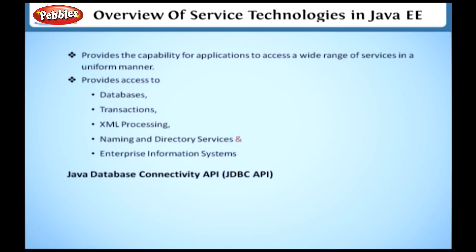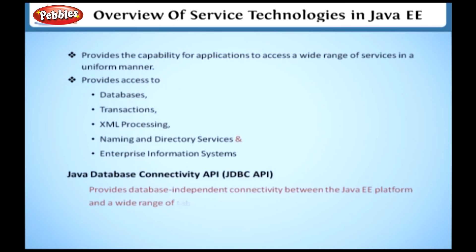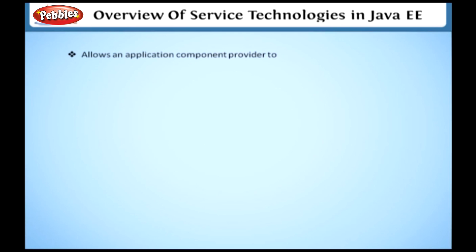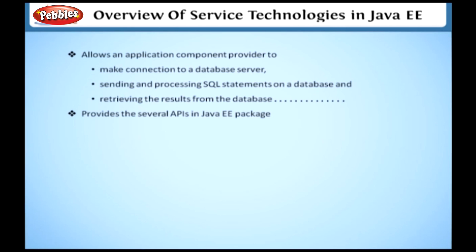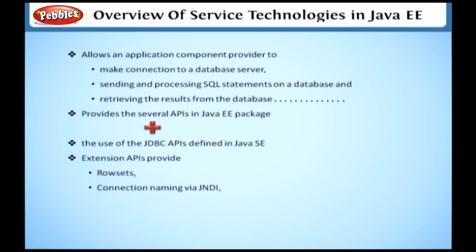Java Database Connectivity API — JDBC API. The JDBC API provides database-independent connectivity between the Java EE platform and a wide range of data sources. JDBC technology allows an application component provider to make connections to a database server, send and process SQL statements on a database, and retrieve the results from the database. To interact with the Java EE server, JDBC provides several APIs in Java EE packaging in addition to the JDBC APIs defined in Java SE. The extension APIs provide rowsets, action naming via JNDI, transaction pooling, and distributed transaction support.